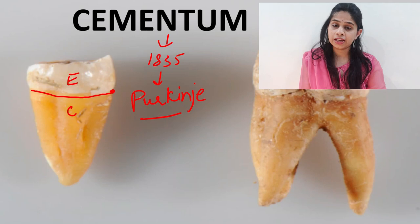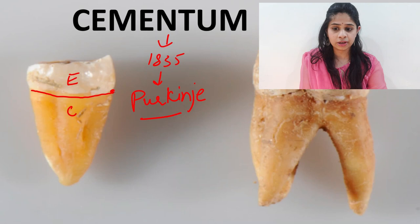For now let's understand that the cementum is a tissue which starts at the cervical end of the CEJ and extends up till the apex of the root.